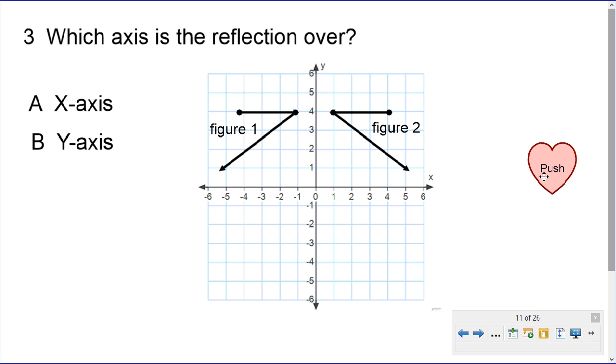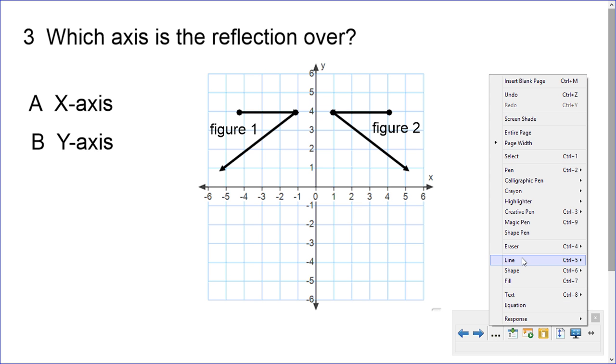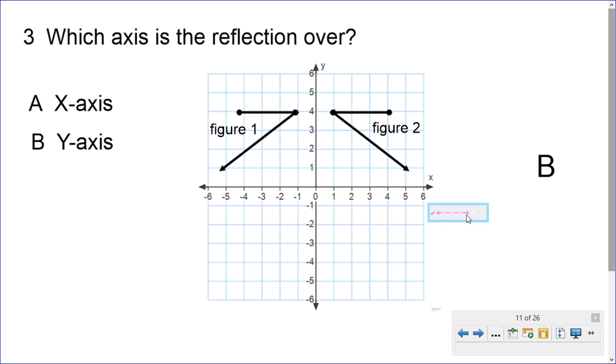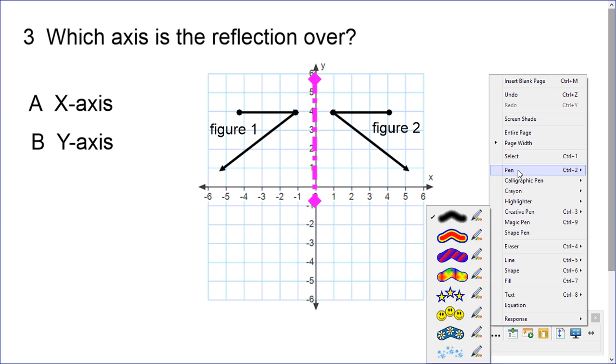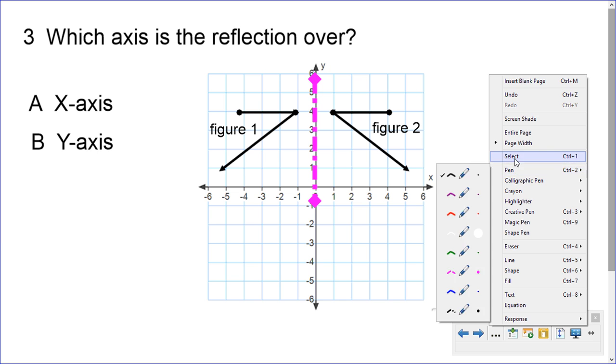So our answer would be B, reflection of the y-axis. And in case you don't see it, let me get a line tool. It's like having a mirror on the y-axis, because these two are staring right at each other, just the opposite sides of the mirror. So that is a reflection of the y-axis.